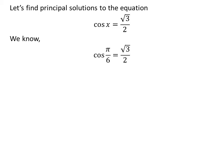We know the value of cosine of pi upon 6 is square root of 3 upon 2. We know the value of cosine of x repeats after the interval of 2 times pi, so cosine of 2 times pi minus a is equal to cosine of minus a. We also know the famous trigonometry identity cosine of minus a is equal to cosine of a.